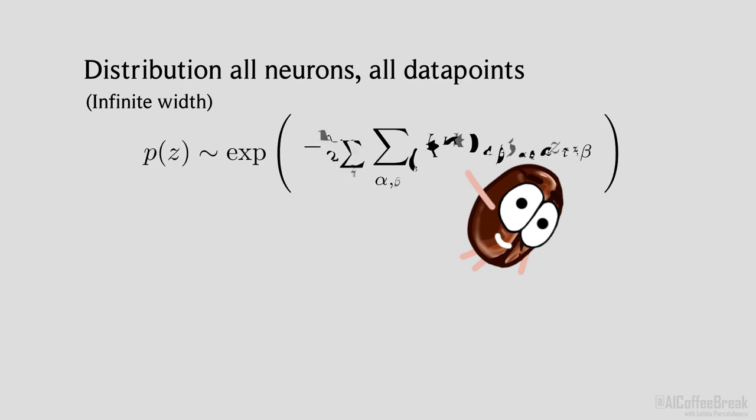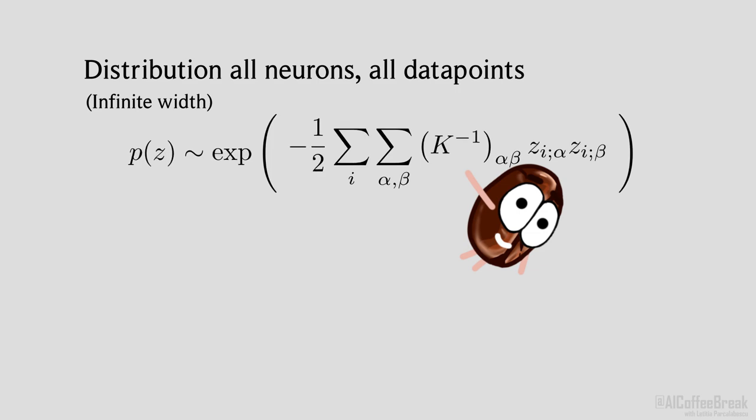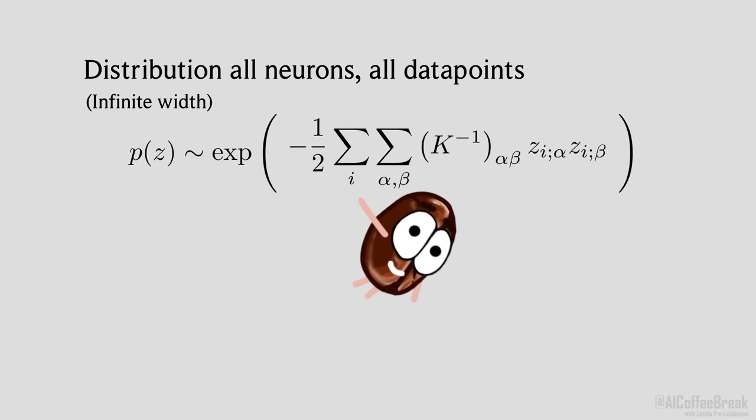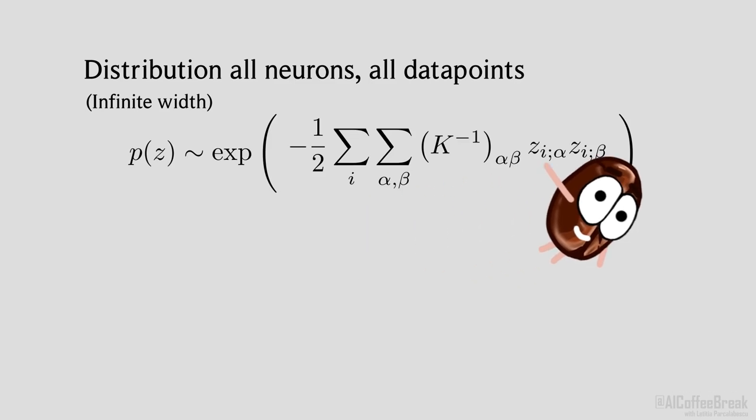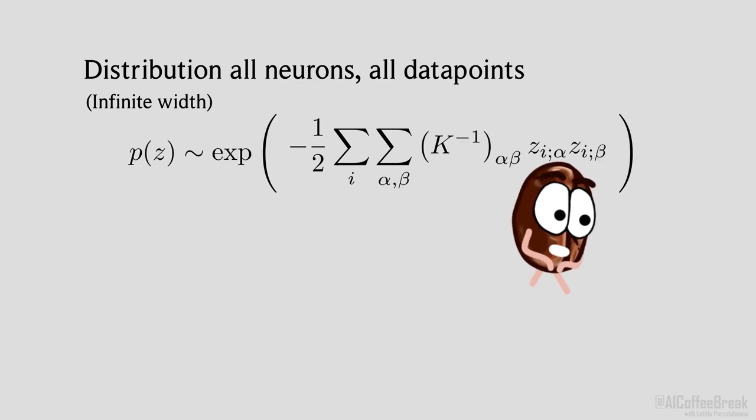To get a distribution for all the neurons in the layer, we generalize this expression further and add neuron labels with a lowercase roman letter. Okay, so our distribution, p of z, now describes all the neurons for all the different data points in a single layer and we have a z for each neuron and each data point. Note that the covariance matrix doesn't depend on the neuron index.